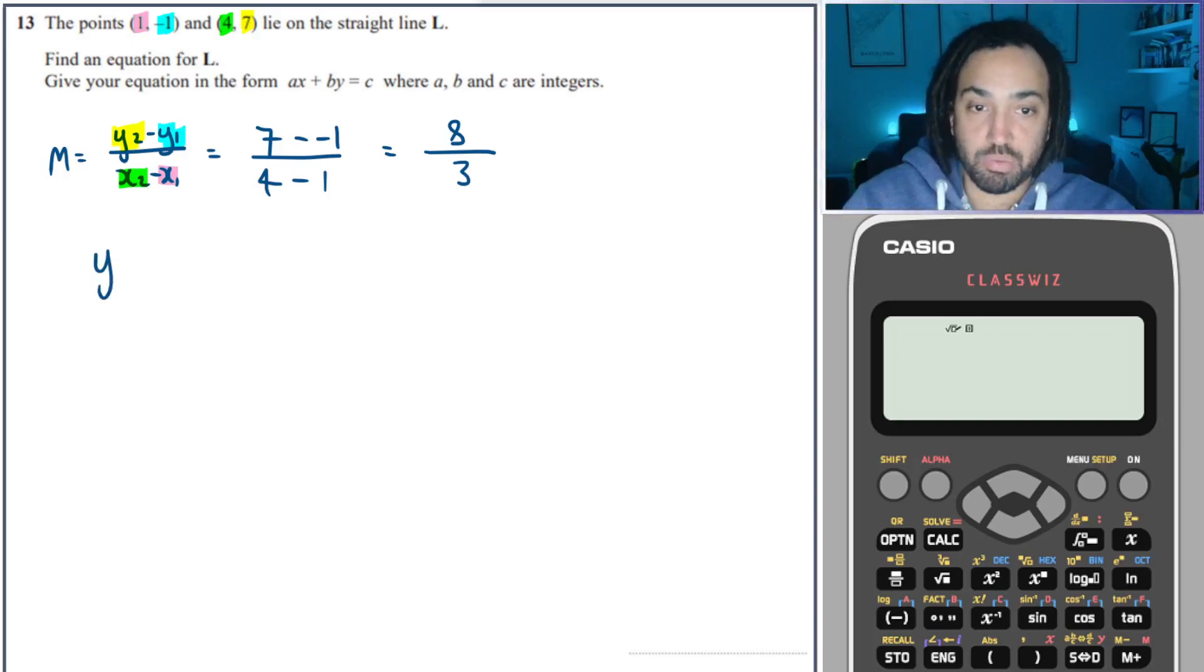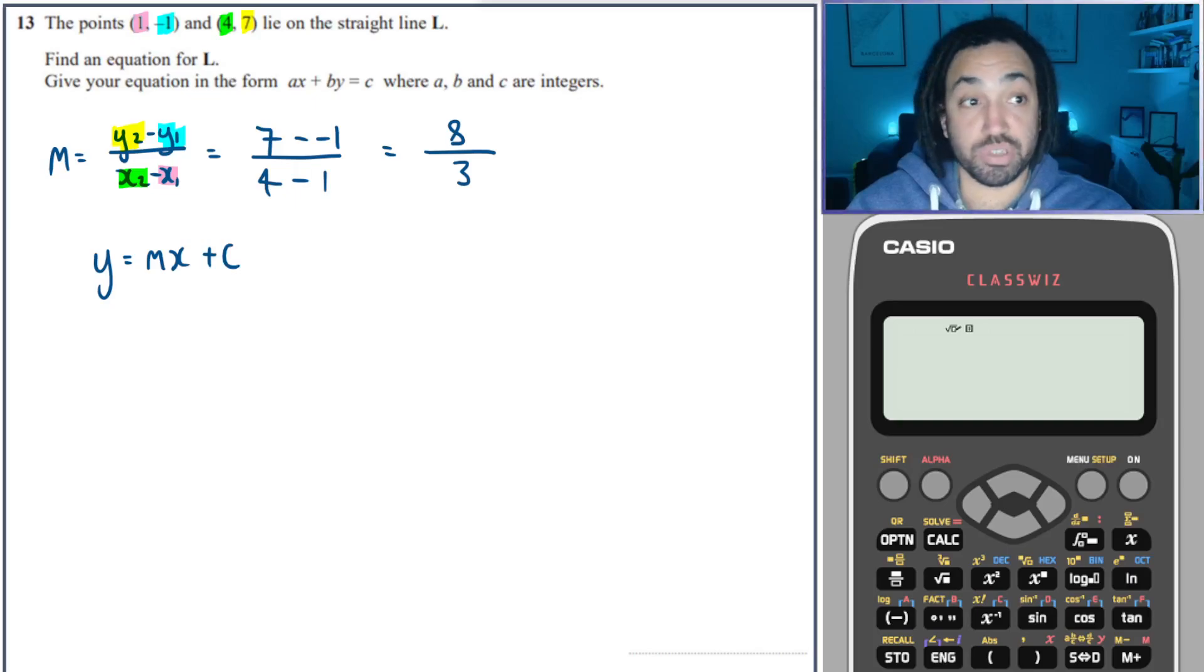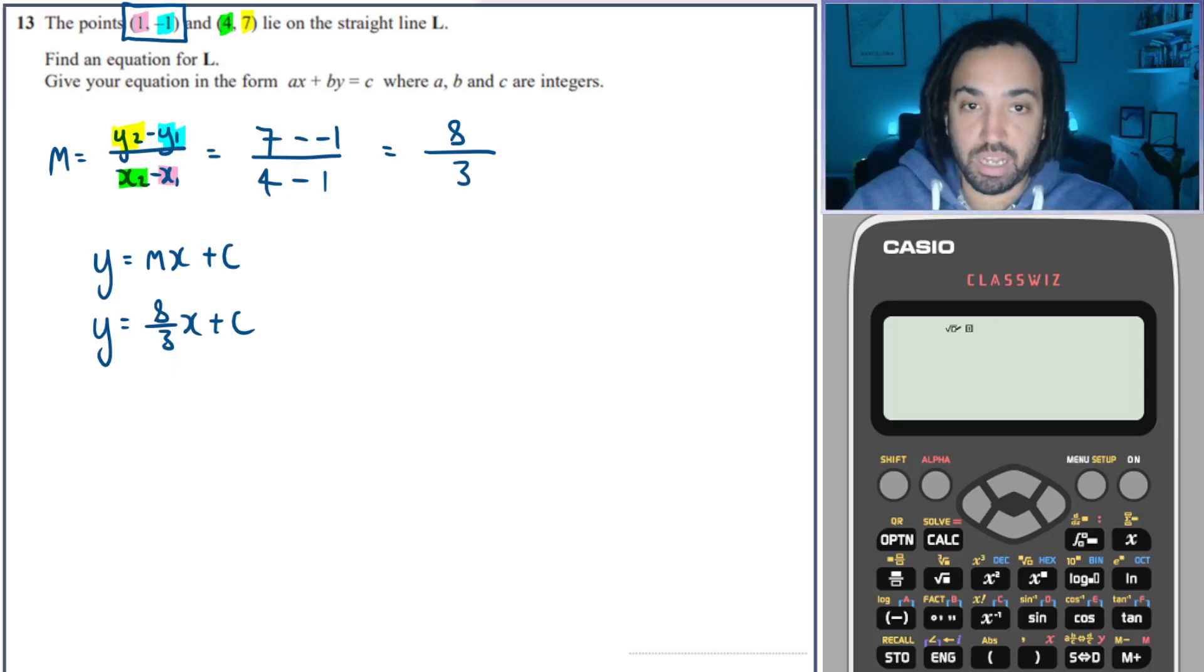Okay, the next thing we need to do is set up a y equals mx plus c. And we need to use one of our points in order to work out the equation of the line to find what the c value is. So I write y is equal to 8 over 3x plus c, because we know the gradient is 8 over 3. And then I know that also all the points on this line are going to be able to satisfy this equation. So if I substitute in any of these points, it should work basically. And that means it will tell me what the c value is. So I'm going to sub in y is minus 1 and x is 1. I could have picked 4, 7, but just the minus 1 and the 1, just easier numbers to work with.